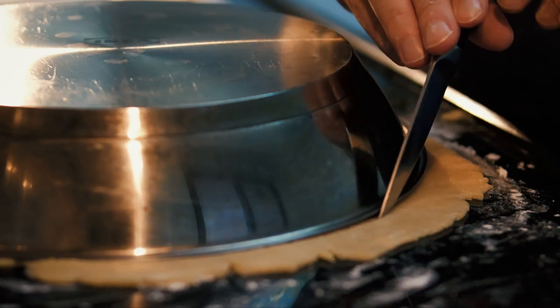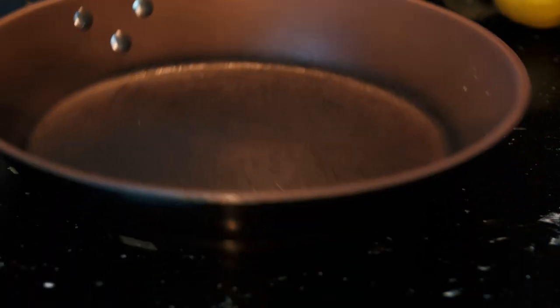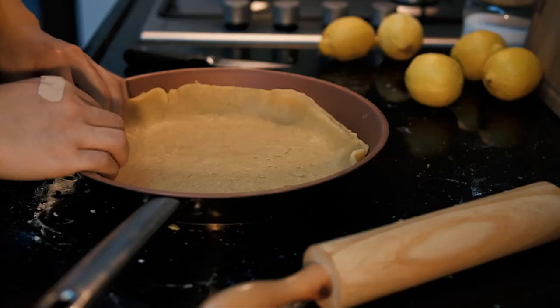Of course, you can use a tart tin instead of a pan, which would make things easier. However, I really enjoy the rustic look of the cake's rough borders with little cracks. I think they add so much coziness to the cake, and that's exactly what I'm going for today.